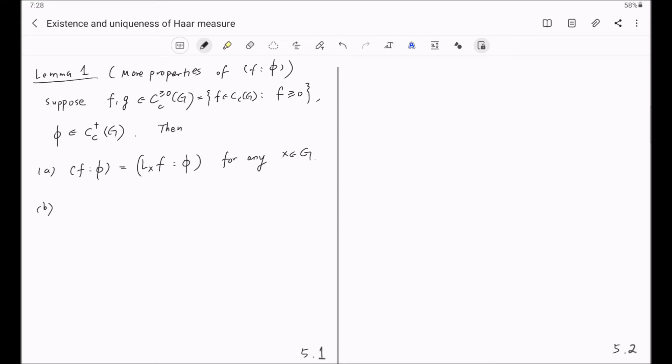And second, a non-negative multiple of F will simply scale this Haar covering number by that multiple. This is for any C greater or equal to zero.